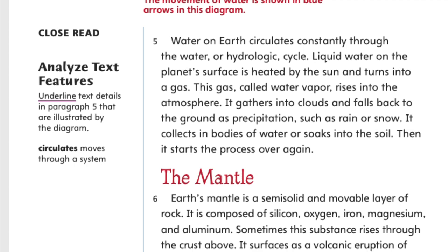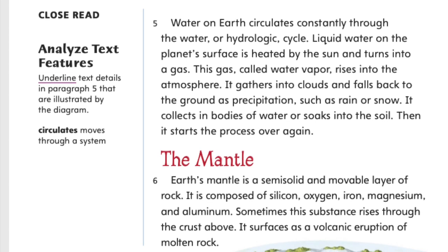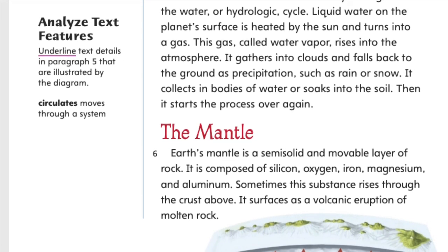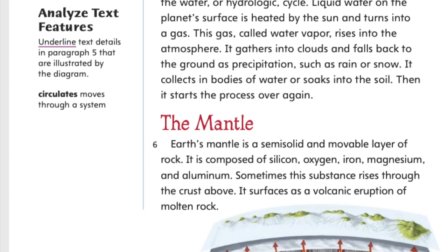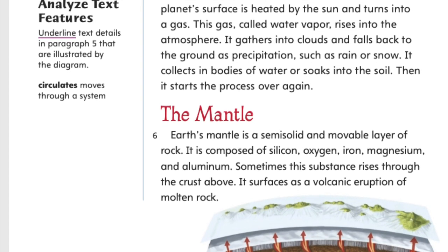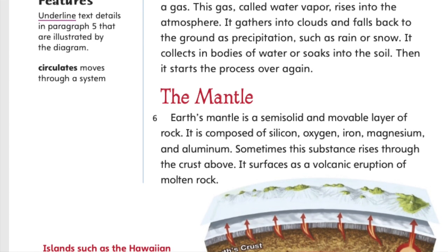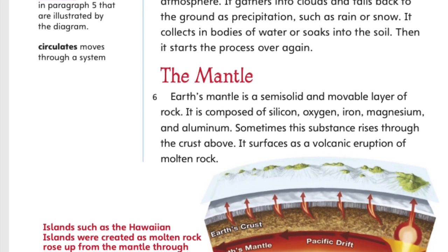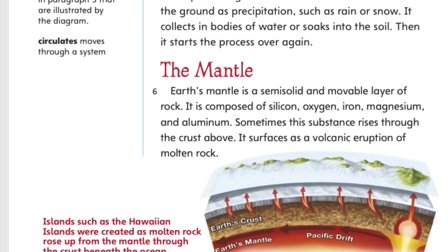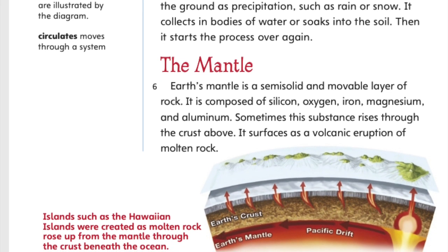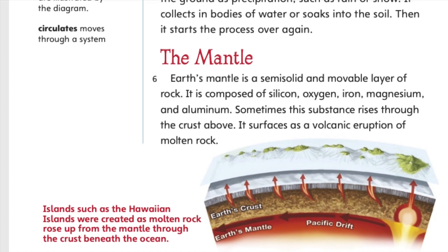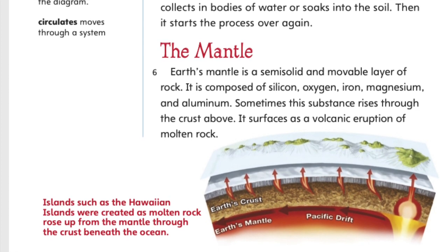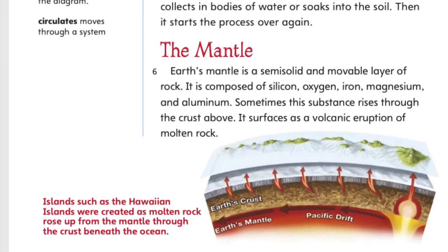The mantle. Earth's mantle is a semi-solid and movable layer of rock. It is composed of silicon, oxygen, iron, magnesium, and aluminum. Sometimes this substance rises through the crust above. It surfaces as a volcanic eruption of molten rock.